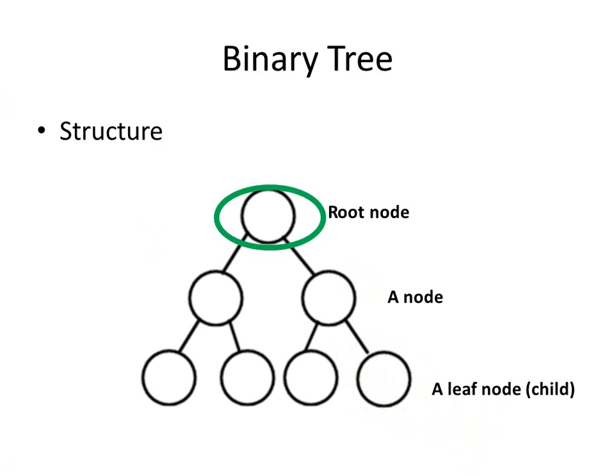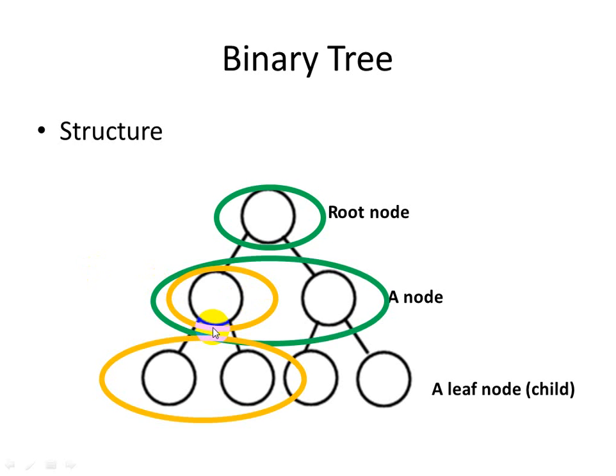And also another important concept is every node has to have two branches ending in a node. So the green represents the root node, which has two subnodes, and this particular node has two subnodes there, but these are known as leaf nodes or child nodes because we cannot go any further, just like the leaf is the very end of a branch.